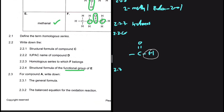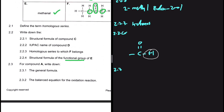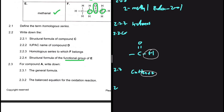For 2.3, compound A is butane. We need its general formula. The general formula of alkanes is CₙH₂ₙ₊₂ — the '2' must be with the 'n', giving 2n, plus 2. That is the answer to 2.3.1.